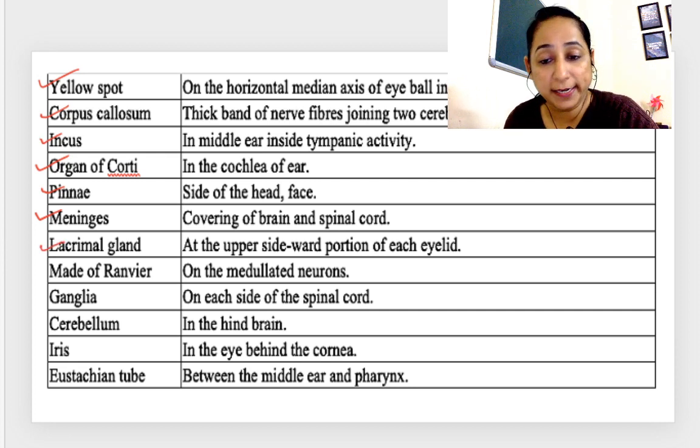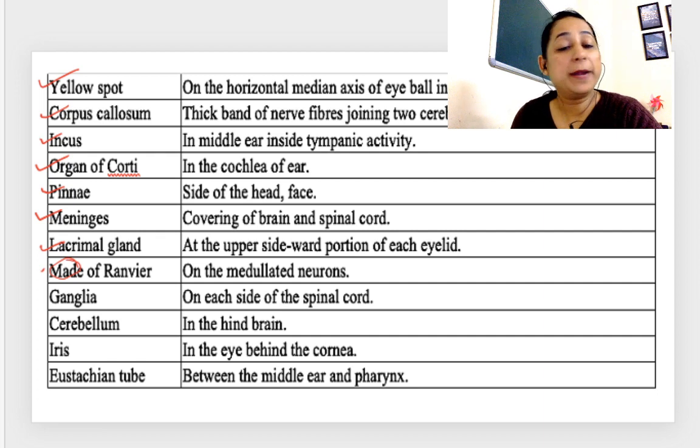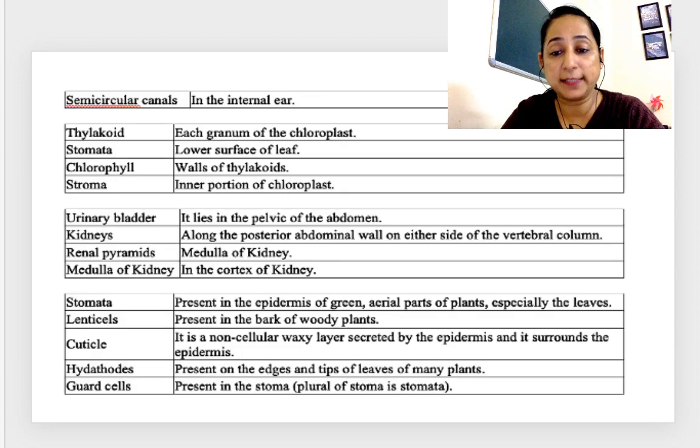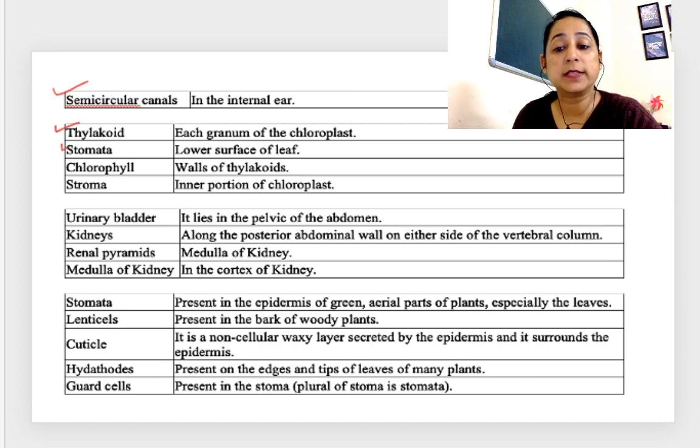Meninges, it is the coverage of the brain. Lacrimal gland, on the upper portion of each eyelid. Node of Ranvier, on the myelinated neuron. Ganglia, on each side of spinal cord. Cerebellum, the hind part of the brain. Iris, in the eye behind cornea. Eustachian tube, between the inner ear and pharynx.